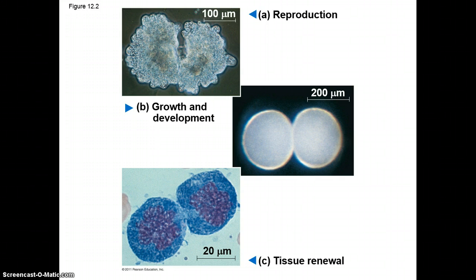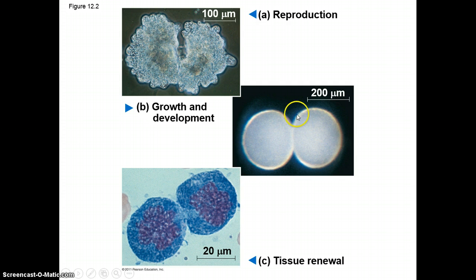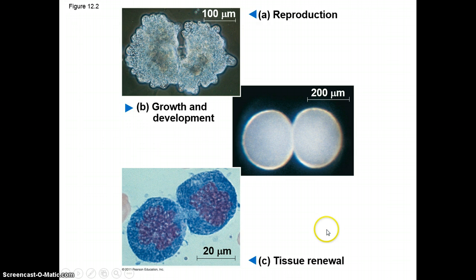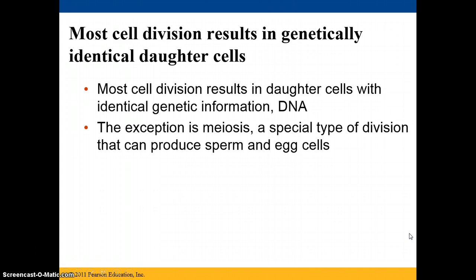Picture A shows a cell reproducing, making a copy of itself. B shows two cells growing, so you've got one cell adding another cell. And slide C shows tissue renewal, or in other words, healing.